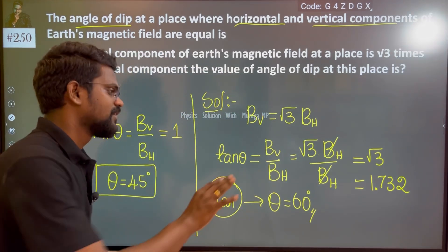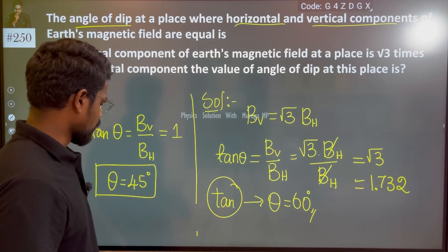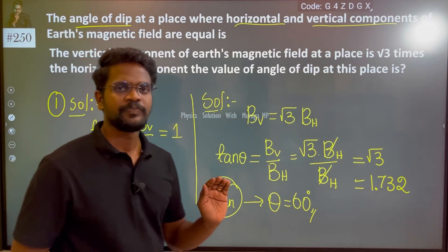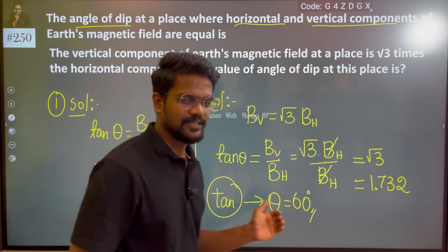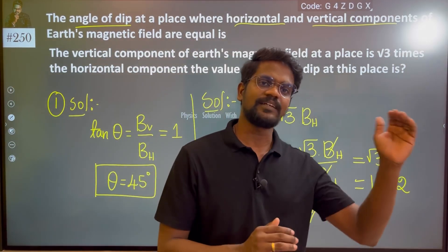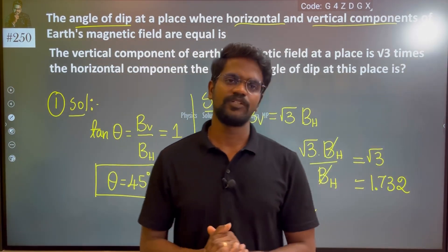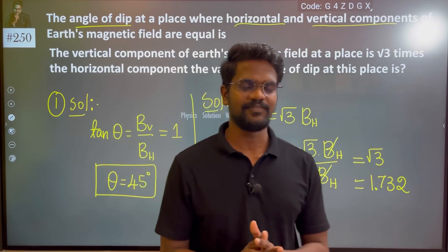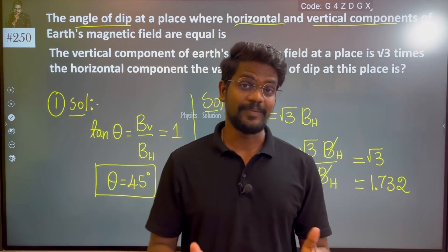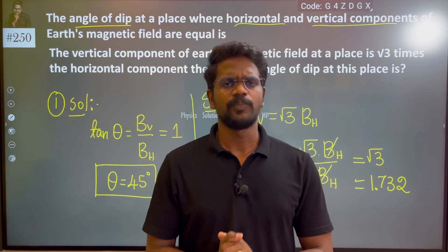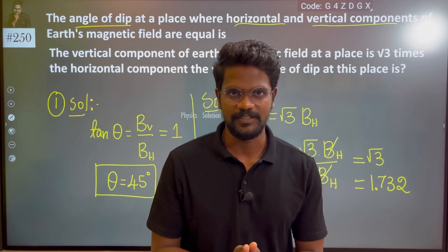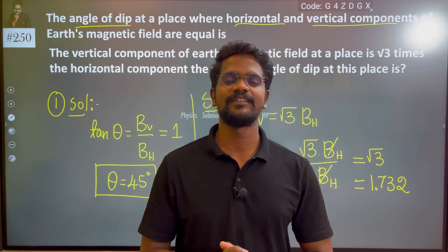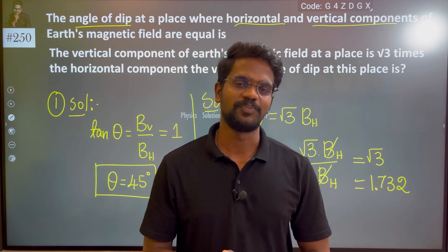That is the correct answer — a very simple concept. The Angle of Dip equals Vertical Component divided by Horizontal Component of Earth's Magnetic Field. A really easy concept. Thank you. Help this with a smile.